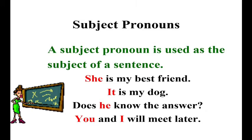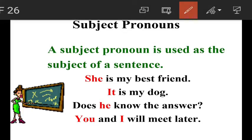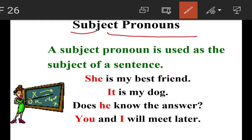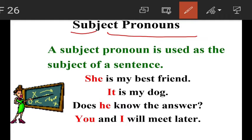Personal pronouns are divided into subject pronouns and object pronouns. A subject pronoun is used as the subject of a sentence. Subject means the doer of the action. The pronoun which is the doer of the action is called a subject pronoun.